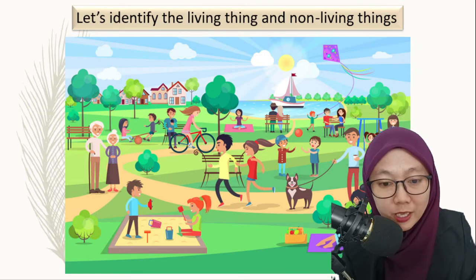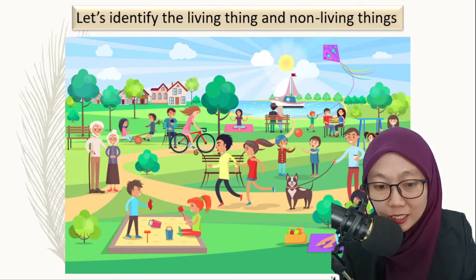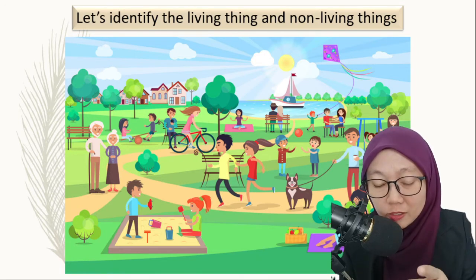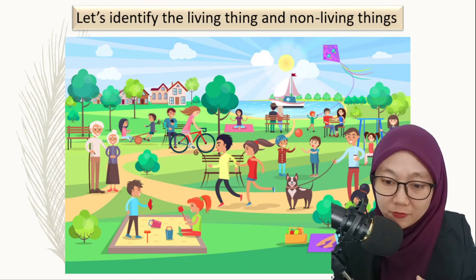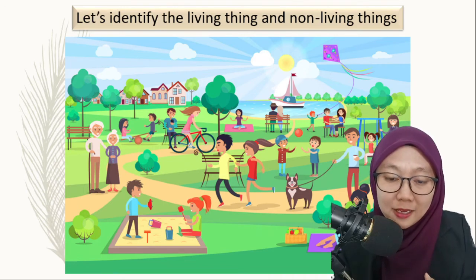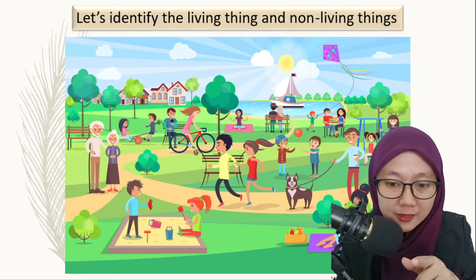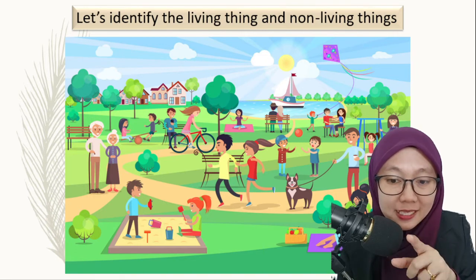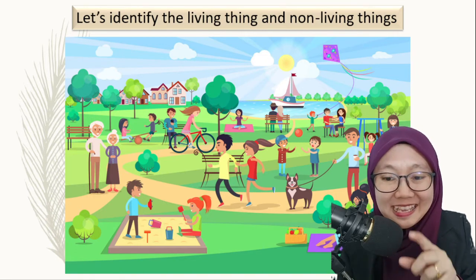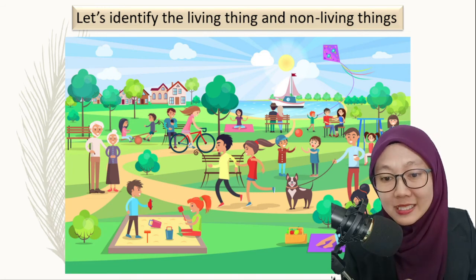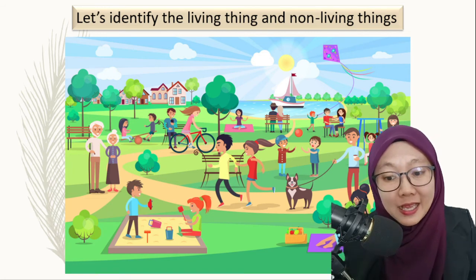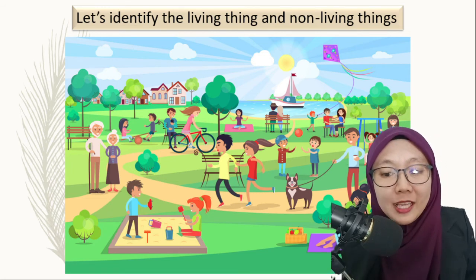In the playground, we have a girl cycling a bicycle. The girl is a living thing, but the bicycle is a non-living thing. There is also a little boy playing a kite — that boy is a living thing, but the kite is a non-living thing.